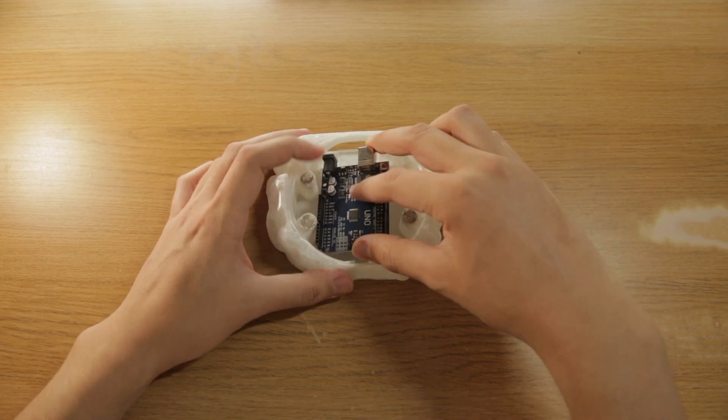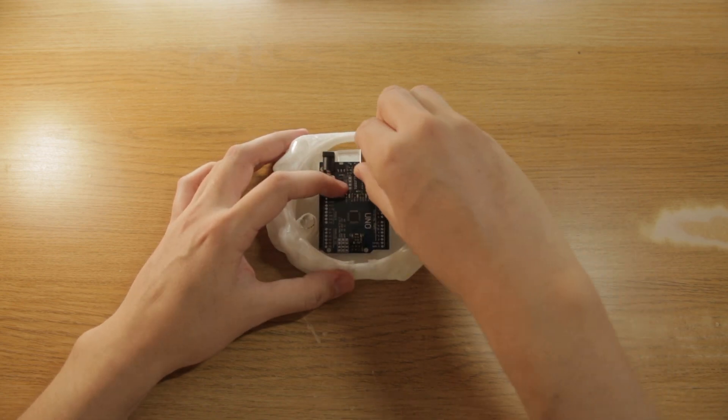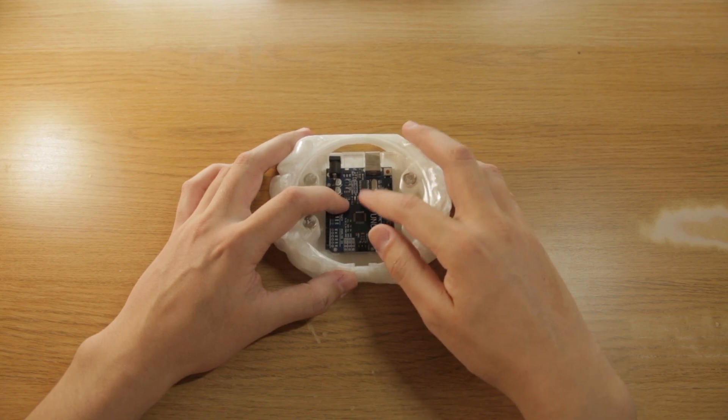What you're going to do is place the controller inside the base, line those up. That should be snug.